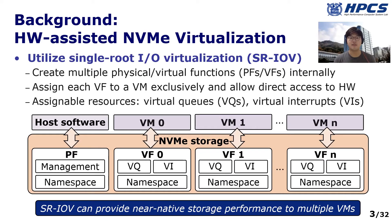One way to virtualize NVMe devices is utilizing hardware-assisted virtualization mechanisms. For example, an SR-IOV-capable device virtualizes itself and creates multiple physical and virtual functions. Its virtual machine then has direct access to those virtual functions. To isolate device resource usage, NVMe allows its virtual functions to get exclusive use of device resources, such as virtual queues, virtual interrupts, and a different namespace. SR-IOV can provide near-native NVMe performance to multiple virtual machines while bypassing the host software.